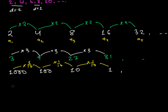From these examples we can conclude that if we have the first term a, then the second term is a times a constant r. The third term is obtained by multiplying the second term (ar) by r again, giving ar². The fourth term is ar² times r, which is ar³.